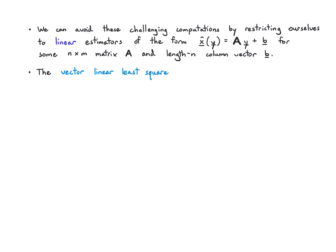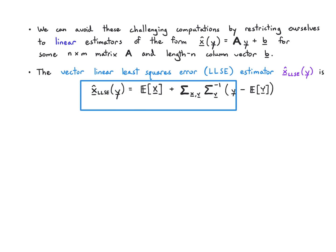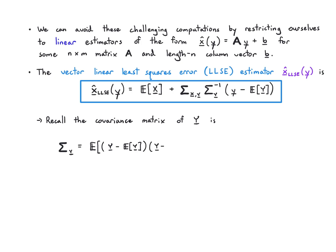The vector linear least squares error, or LLSE estimator, looks just like the thing we defined before. It's the mean of x vector plus the cross covariance matrix times the inverse covariance matrix of y times y vector minus the mean vector for y. We remember that the covariance matrix is this object where we take the outer product of y minus its mean, and we average that. We end up with this matrix of covariances. Each entry - the ith jth entry - has the covariance between the ith and jth variable, and on the diagonal we have the variances.